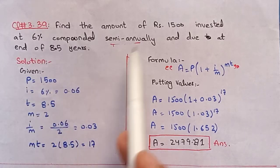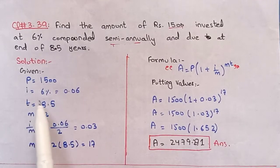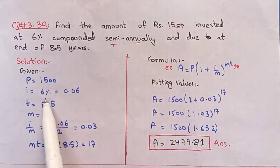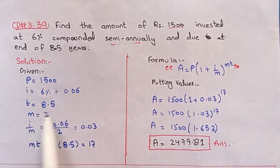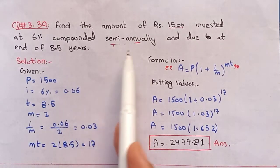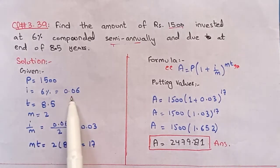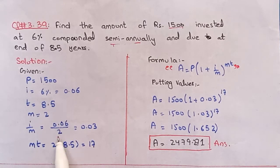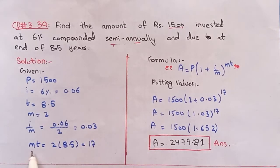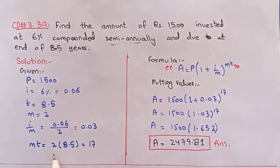Given: Principal P = 1500, interest rate i = 6%, so removing the percentage and dividing by 100 gives 0.06. Time t = 8.5 years. M is semi-annually, so m = 2. Finding i divided by m: 0.06 divided by 2 equals 0.03. Finding mt (the exponent): m = 2 multiplied by t = 8.5 gives mt = 17.